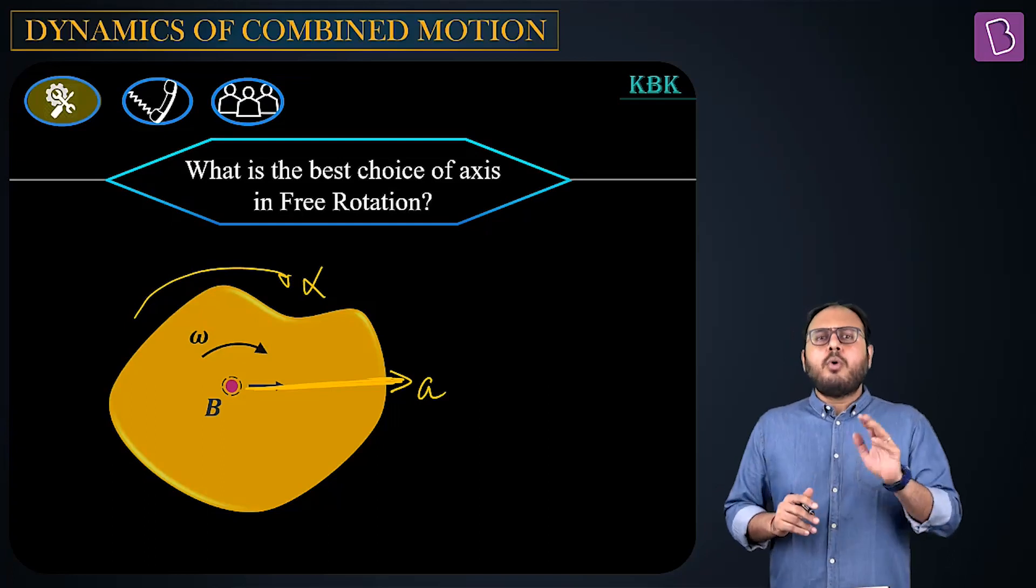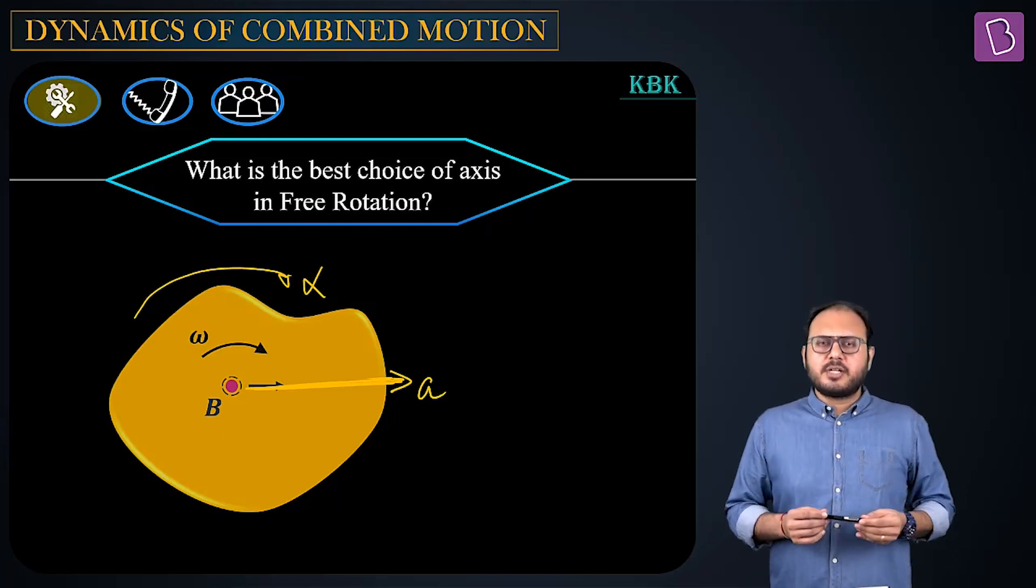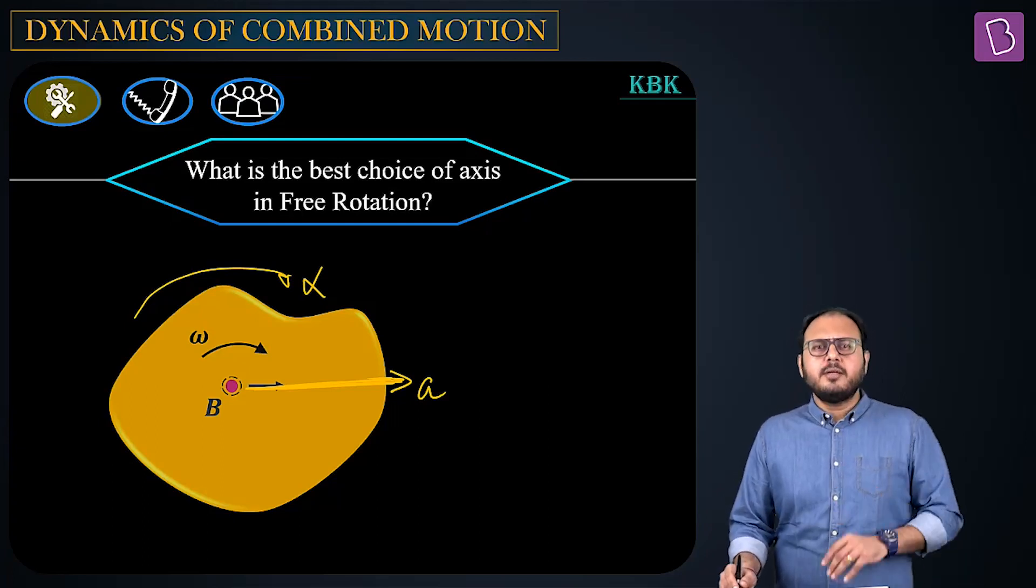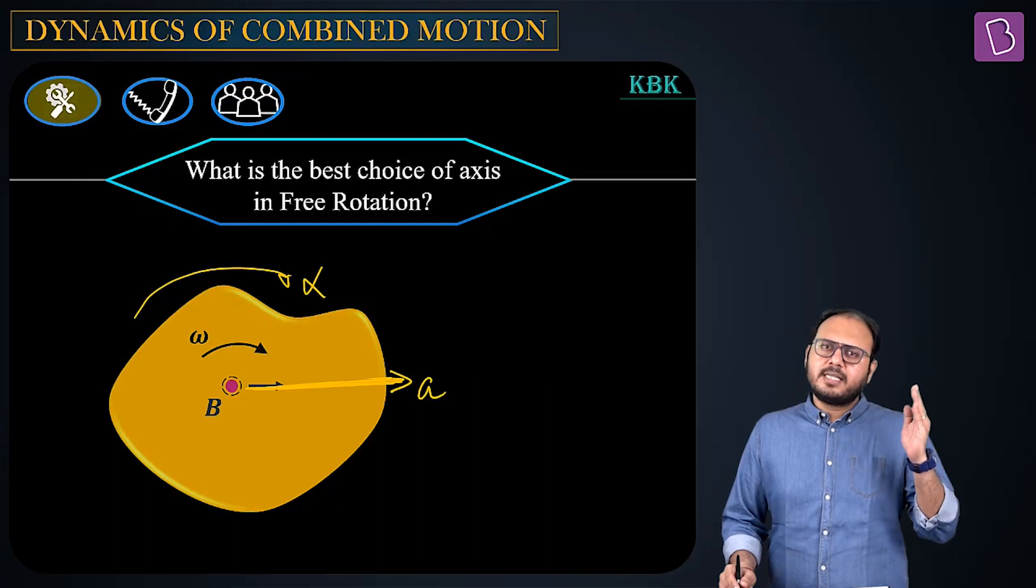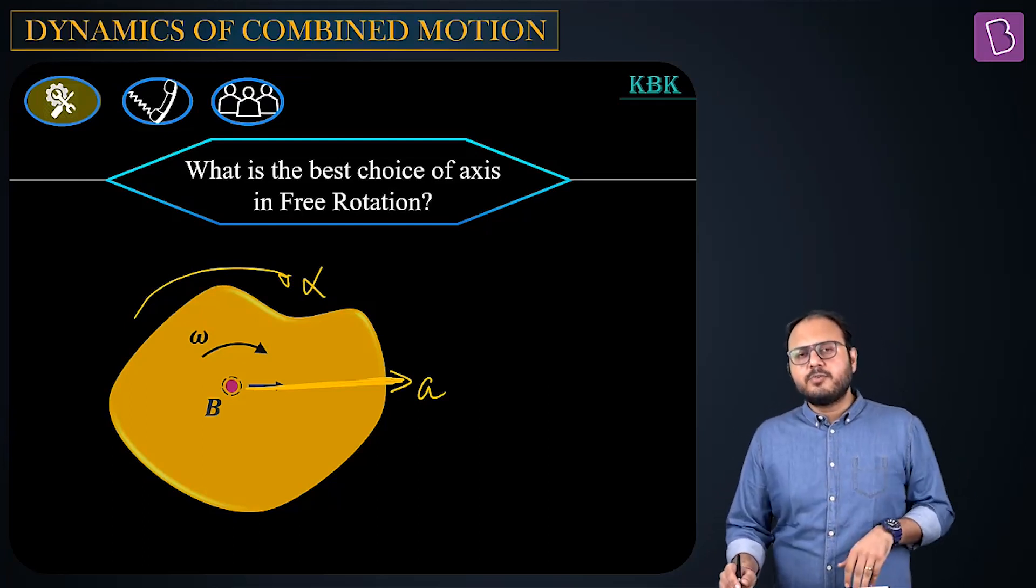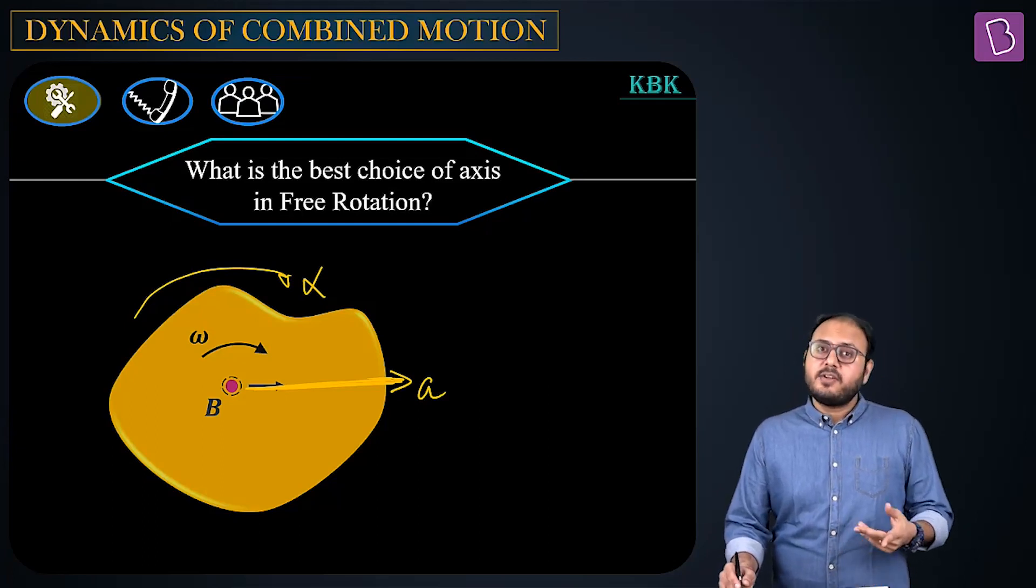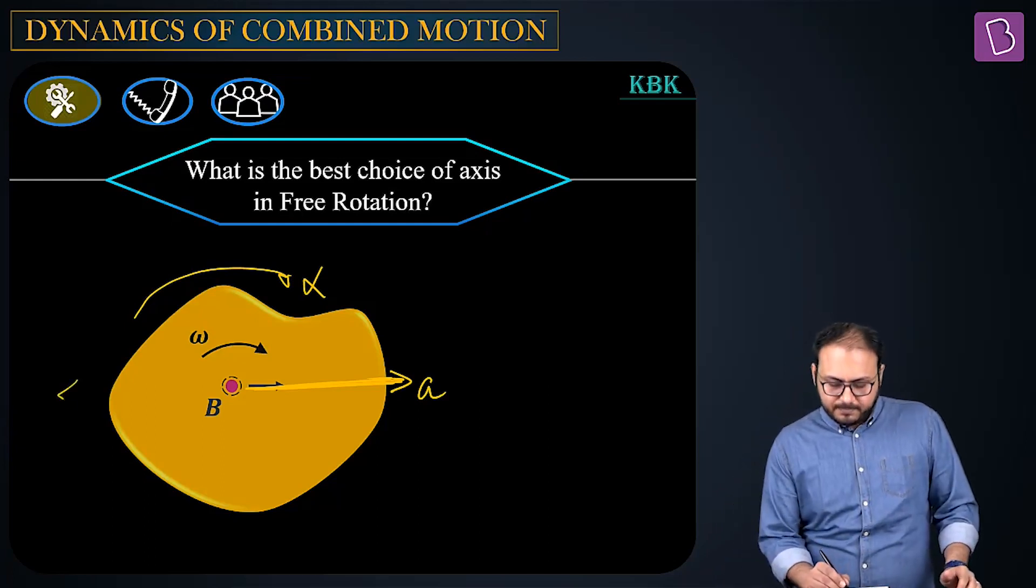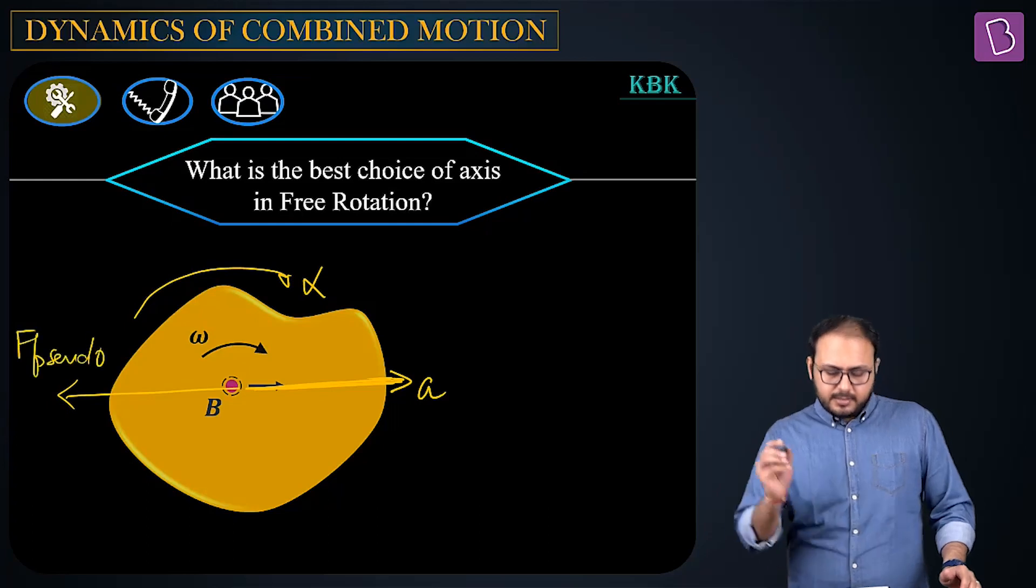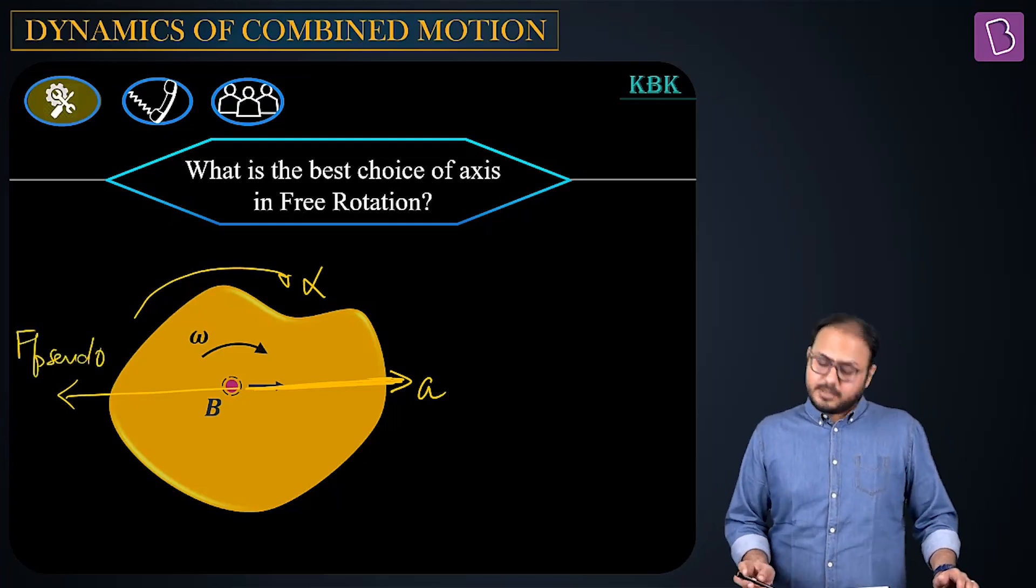Point number two. What do you do if you have a non-inertial reference? Sir, we apply pseudoforce. Good. Where do you apply pseudoforce? Sir, pseudoforce is on the body. But gone are those days. That time particle used to be the body. Now it's a rigid body. Where will you apply pseudoforce? On the center of mass. So you apply pseudoforce on center of mass.